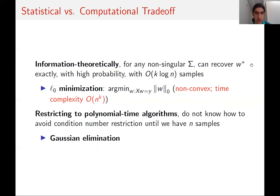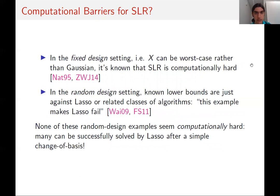So there's an essentially exponential gap in sample complexity between what we can do information theoretically and what we can do efficiently when sigma is ill-conditioned. In the fixed design setting, where the covariance can be worst-case arbitrary, sparse regression is known to be computationally hard. But in the random design setting, the lower bounds we know are just against lasso or basis pursuit or related classes of algorithms—showing a specific example that makes the particular algorithm fail, but none of these examples seem computationally hard. In fact, many of these examples can be successfully solved by one of the classical polynomial-time algorithms after a simple change of basis.